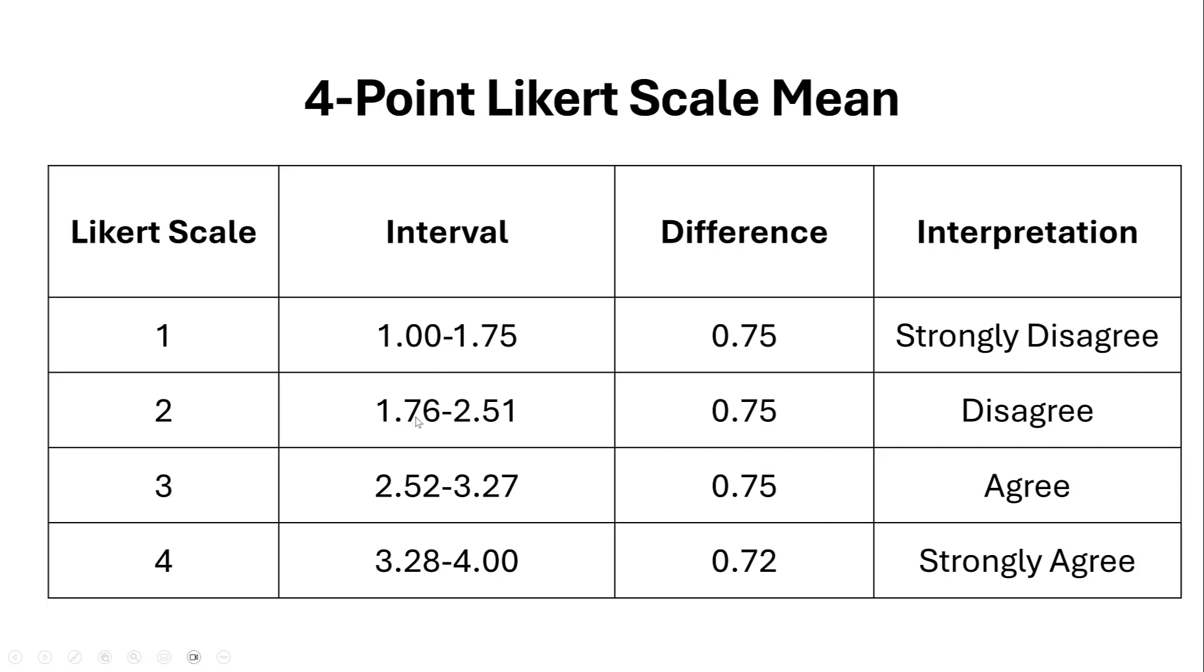Again, for 1.76 to 2.51 we have a 0.75 interval meaning disagree. From 2.52 to 3.27 refers to agree, and from 3.28 to 4.00 means strongly agree. You could see that this last one has a lower difference compared to others, so there could be some biases with regard to Likert scale interpretation that was found by some studies.